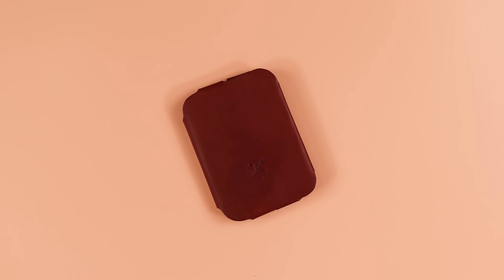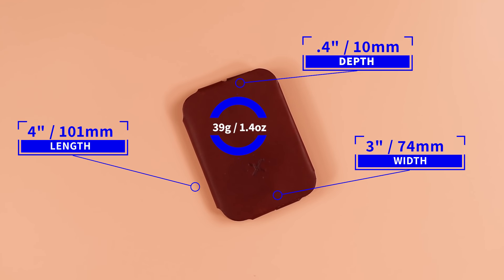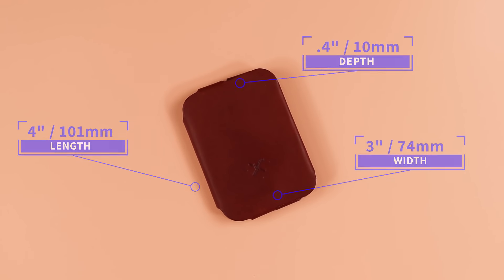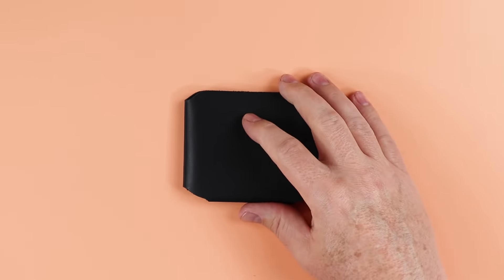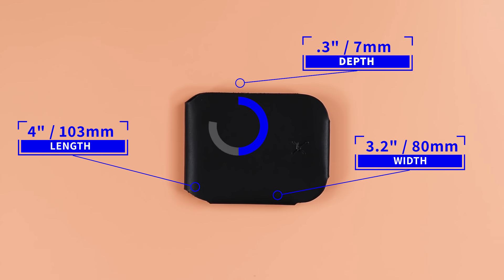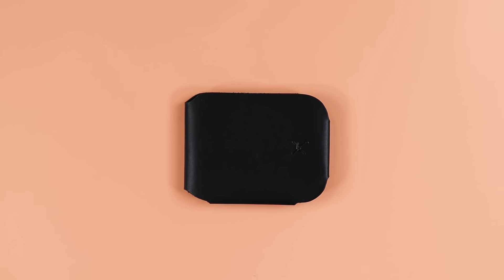The assembly one product measures four by three by 0.4 and it weighs 39 grams or 1.4 ounces. If we took a look here, we've got the assembly number two, that's four by 3.2 by 0.3 and weighs 33 grams or 1.2 ounces.